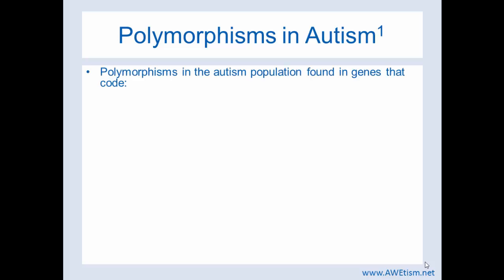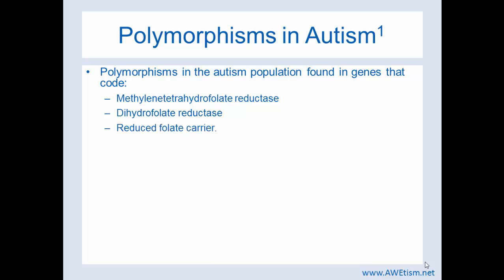There are other polymorphisms in the autism population, found in genes that code methylene tetrahydrofolate reductase, dihydrofolate reductase, and reduced folate carrier. You can see folate is common in all three of those.